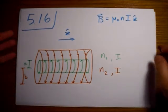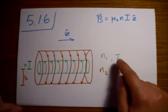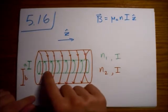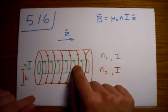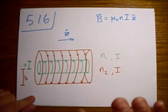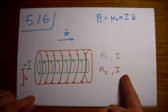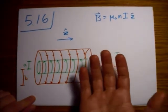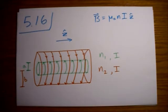The current is going in different directions, so for the smaller one inside it's going around like this, and for the outer one it's coming around like this. So that's important for our right-hand rule.